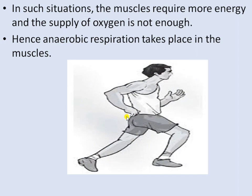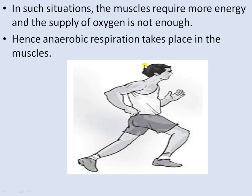During heavy exercise like running and gymnastics, our muscles start aching because they start respiring anaerobically. As the demand for oxygen becomes much more than what is supplied, a temporary deficiency of oxygen occurs in the muscles. To meet the demand, the cells start respiring anaerobically — glucose breaks down partially to form lactic acid and releases some energy.